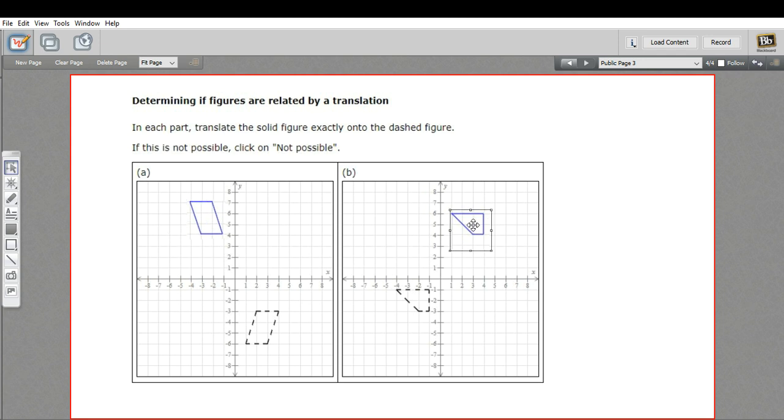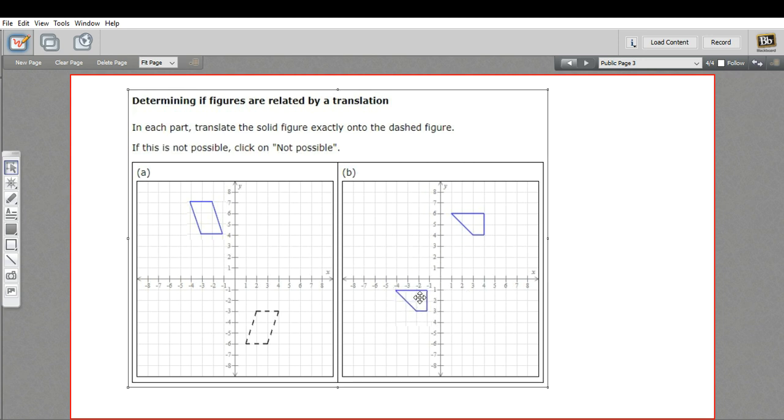Let's try B. You may be able to tell already just by looking at it that that is indeed possible. You can just move that right on there. So that one is related by a translation.